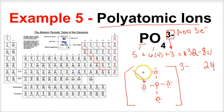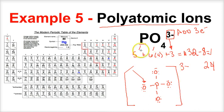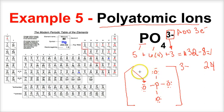That is beginning level Lewis structures. Make sure you have your periodic table with electronegativity values, count up the total number of valence electrons, satisfy the duet rule for hydrogen and the octet rule for all other atoms, put the least electronegative element at the center, and remember that hydrogen can never be the central atom. I hope this was helpful.